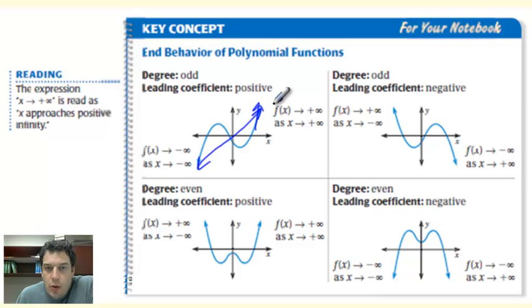So as we go to the right, where x is going to positive infinity, f of x, or our y values, are also going up. Same thing over here. f of x is going to negative infinity as x goes to negative infinity, describing this end behavior.